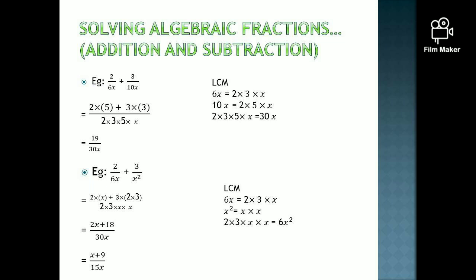The denominator in the next step is 2 into 3 into 5 into x. Take the first term 2 over 6x — denominator is 6x, which is 2 into 3 into x. Cover 2 into 3 into x — the remaining term is only 5. Write 2 into 5. The next denominator is 10x, that is 2 into 5 into x. Cover 2 into 5 into x — the remaining term is 3. Write 3 into 3. Simplify: 2 into 5 is 10 plus 3 into 3 is 9 — that's 19 over 30x.